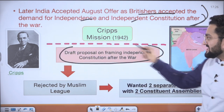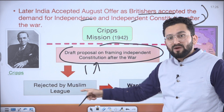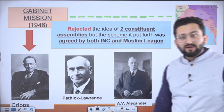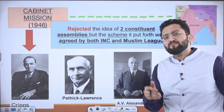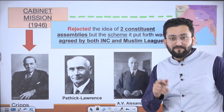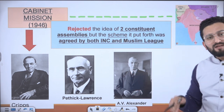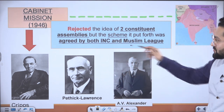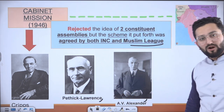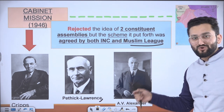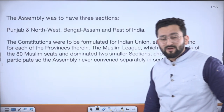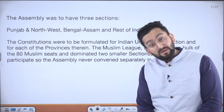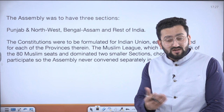A draft proposal on framing an independent constitution after the war was rejected by the Muslim League because they wanted a separate Constituent Assembly for two nations. Then came the Cabinet Mission. The scheme the Cabinet Mission proposed before the Indian National Congress, Muslim League, and some other parties was accepted. Although the Muslim League principally wanted a separate Constituent Assembly, the method proposed by the Cabinet Mission was agreed upon. Both the INC and Muslim League agreed. Cripps, Pathak Lawrence, and A.V. Alexander were part of this — please remember these names as UPSC has asked questions on these facts.